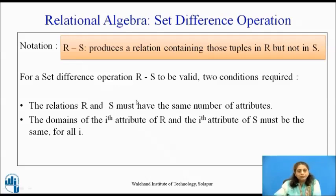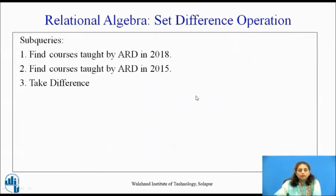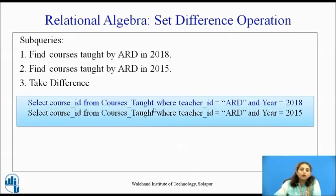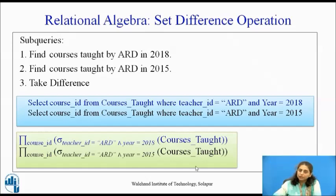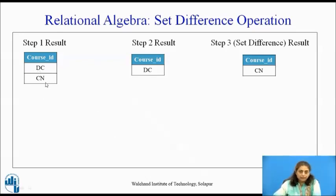Next is the set difference operation. Sometimes we want tuples present in one relation but not in the other. The two relations must still be compatible. Consider the query: find courses taught by ARD in 2018 but not in 2015. The sub-queries are the same as before, but here the order matters — we write 2018 first, then subtract 2015 using the difference operator. Courses taught in 2018 are DC and CN; courses taught in 2015 is DC. So the result is only CN.